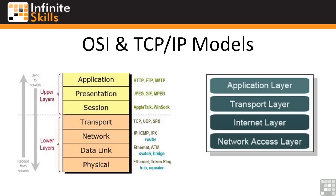Above that we've got the session layer, which includes protocols like AppleTalk and Winsock. The presentation layer, which is layer six, covers image and video file formats — JPEGs, GIFs, and MPEGs. Finally, at the application layer, or layer seven, we've got protocols like HTTP, FTP, and SMTP — application protocols are at the application layer.